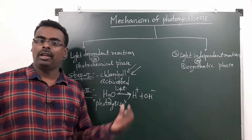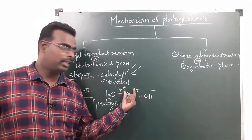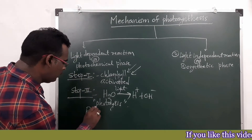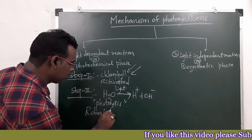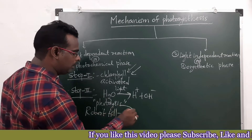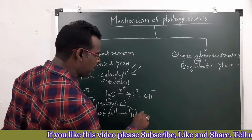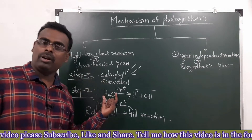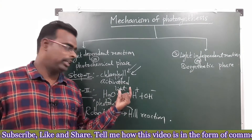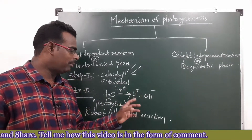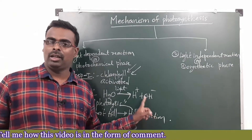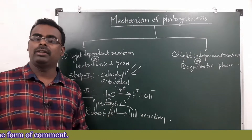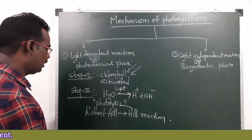Photolysis is the breakdown of the water molecule in the presence of sunlight. This process was discovered by the scientist Robert Hill, so photolysis is also called Hill's reaction. In step two, two ions are formed — H⁺ ions and OH⁻ ions — through the process of photolysis.